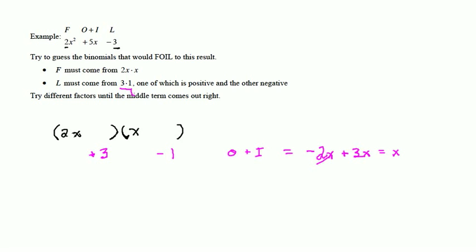And when I combine these I get simply x. What I'm doing with each of these is comparing to my actual middle term to see if I get the same thing. In this case I have x instead of 5x, so I say nope this isn't working.